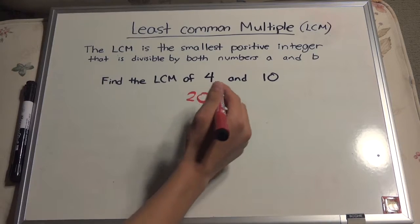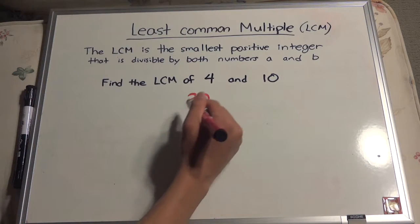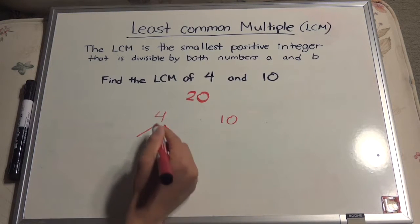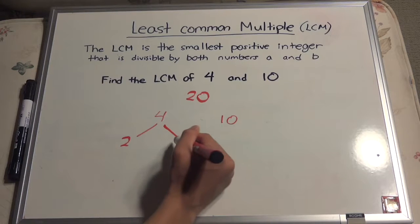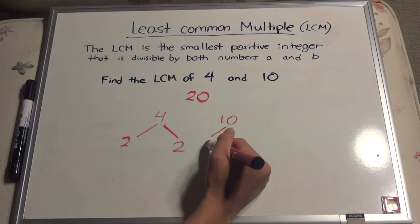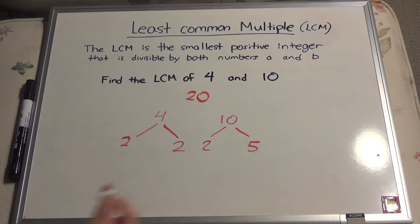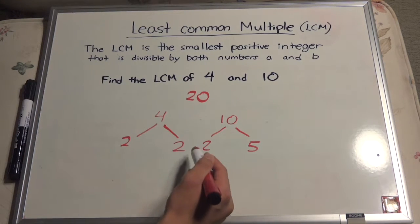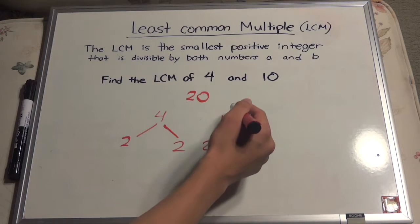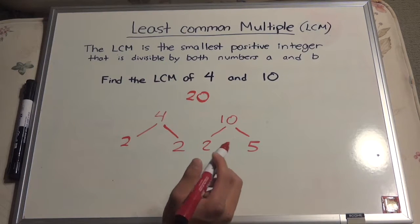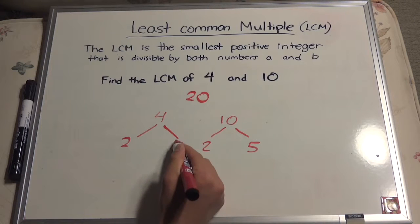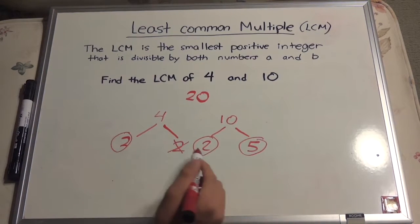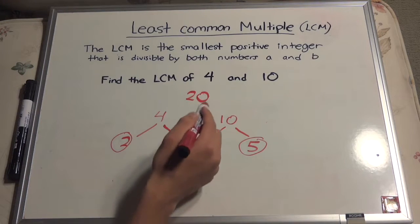Here's a neat trick to get the least common multiple. If you have the numbers 4 and 10, you want to find the factors of each number. The factors of 4 would be 2 and 2, and the factors of 10 would be 2 and 5. If we see that a factor from A equals one of the factors from B, we can cross out one of those matching numbers and multiply the remaining numbers. So 2 times 2 times 5 gives us 20, which lines up with our answer.